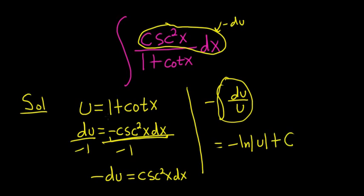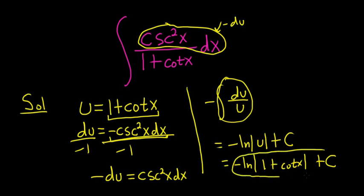And we know that u is 1 plus cotangent. So this is negative natural log absolute value 1 plus cotangent x, absolute value plus our arbitrary constant of integration capital C.